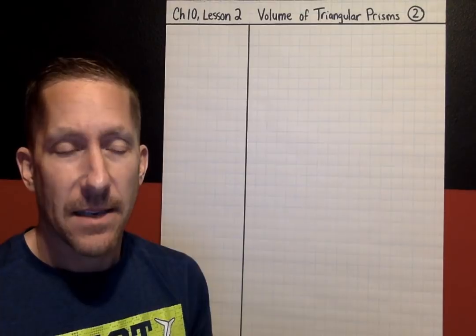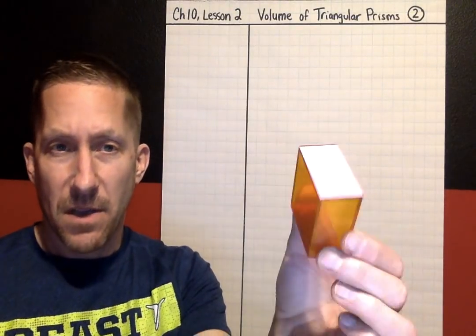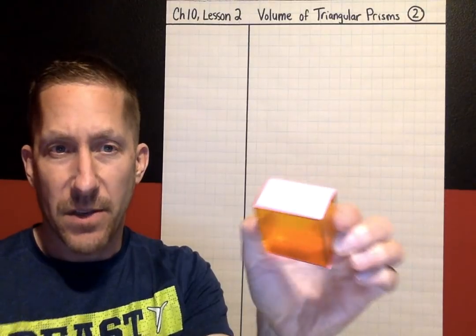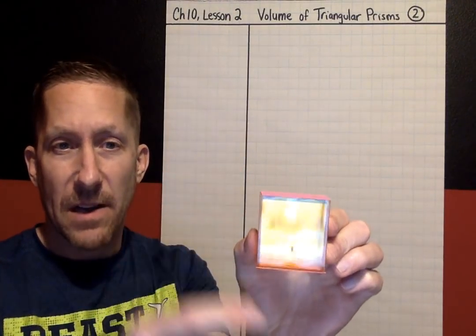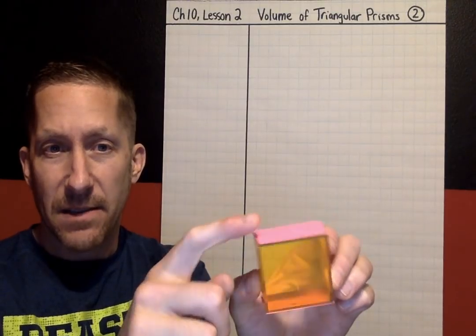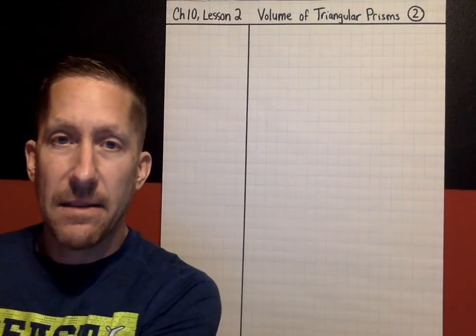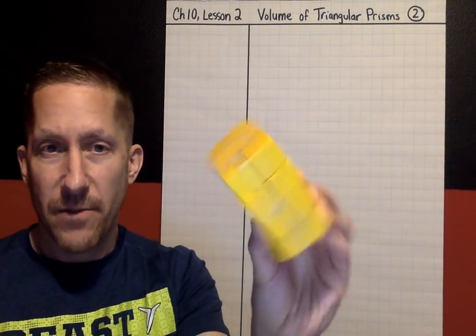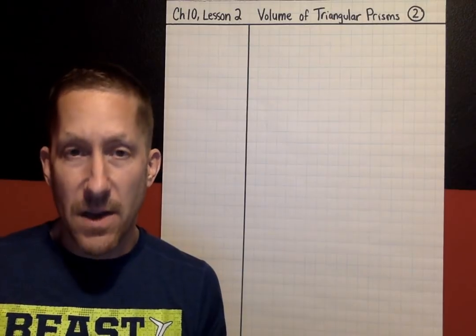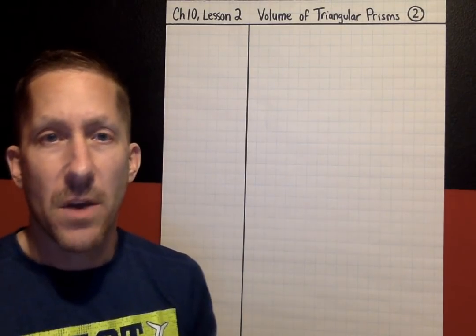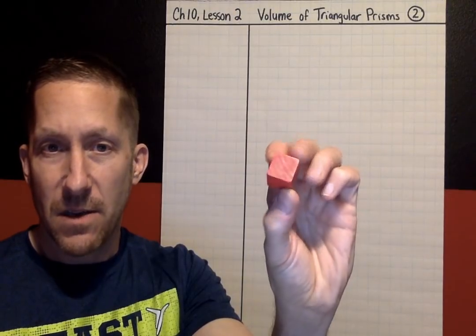So last lesson, lesson 1, we looked at rectangular prisms. Remember a prism is a 3D figure with parallel and identical bases. We looked at how to find the volume of a rectangular prism, and we've also talked about when you hear the word volume, what you should automatically think is we're counting cubes.